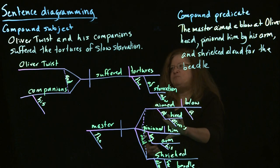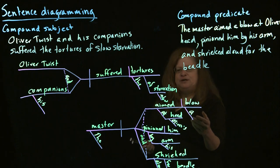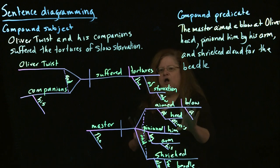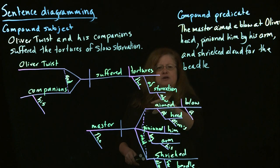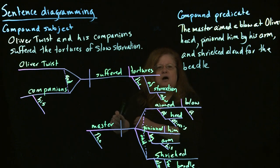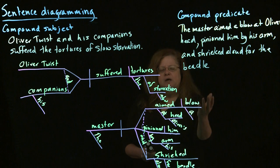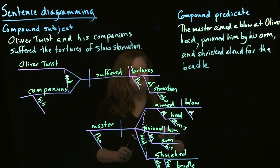So here we have our multiple predicates. Each one can be attached to our subject. The master aimed a blow at Oliver's head. The master pinioned him by his arm. And the master shrieked for the beetle. And this all branches out. So when you have a compound like that, you want to make sure everything fits. This is where if you have trouble with some of your grammar gets a little mixed up, and maybe your instructor has told you to watch out for faulty parallelism. Sometimes drawing a diagram like this will help you to make sure that each of those components in that predicate actually fits.